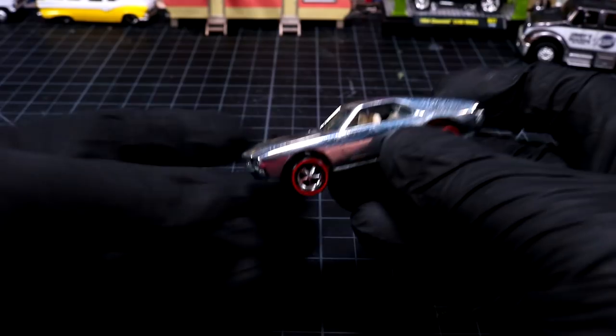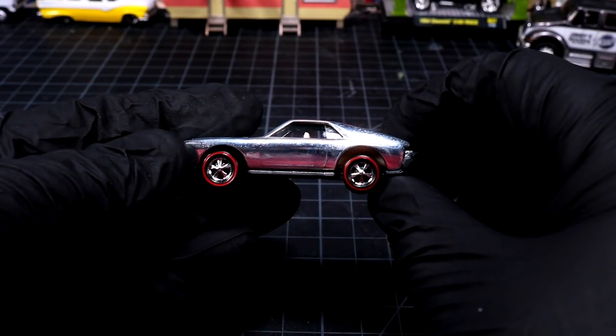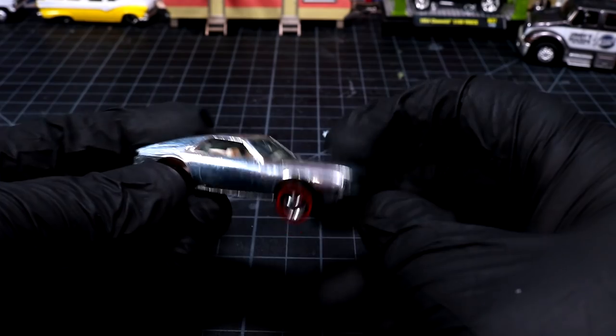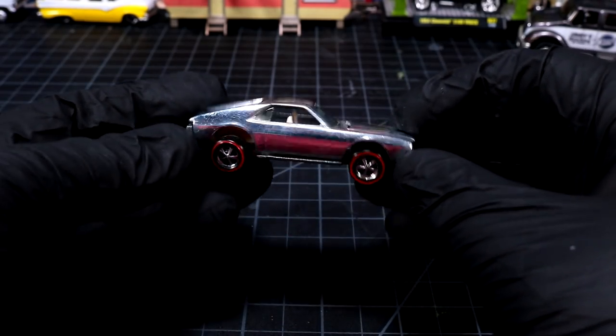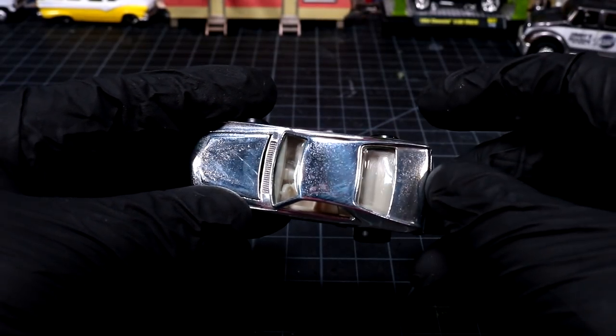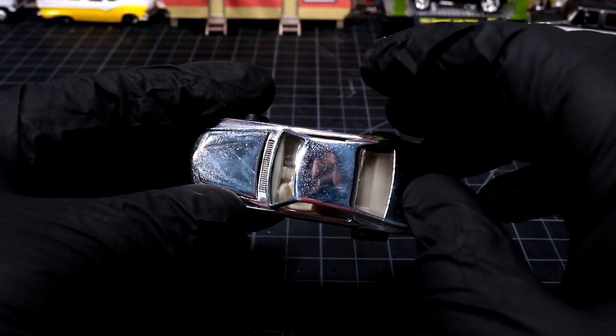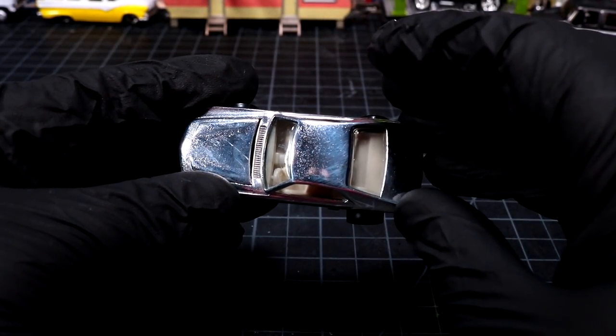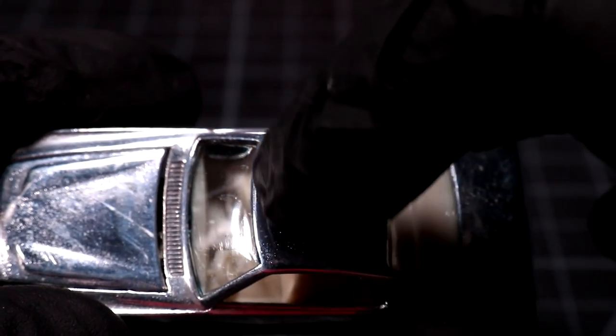Welcome back to Diecast Resurrection. Today we're working on a Hot Wheels Redline AMX. This is another one of those blasts from the past projects. What got me stuck is I didn't have enough zinc plating on it. As you can see, don't look at me tall head, shirt head. You can see all the pitting on this car.